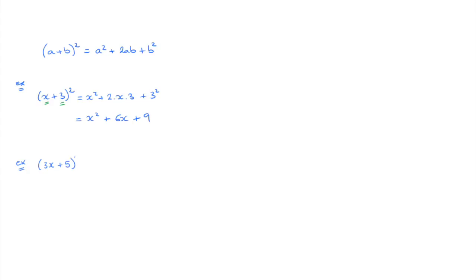Let's look at another example. Say we were asked to write all the terms in the expansion of 3x plus 5 squared. In this case this is again similar to a plus B squared, and the difference being we've replaced a by 3x and B by 5. So once more we can expand using the formula a squared plus 2ab plus B squared, simply replacing a by 3x and B by 5.